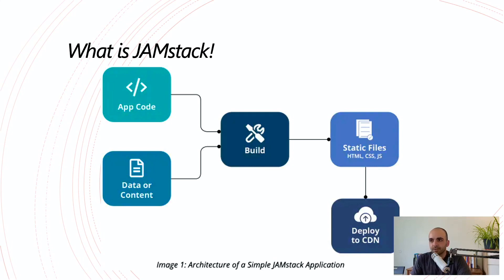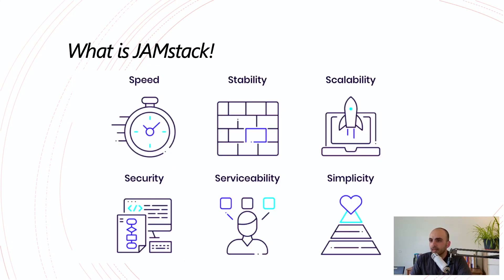To summarize JAMstack: you have some app code — like Vue.js logic — and some data or content using Markdown files, which is pretty common these days. You use build tools like VuePress if you're using Vue.js, or Jekyll as a static site generator. That produces static files, which you then deploy on the cloud. These days you don't even need to create pipelines — you just point your repository to the CDN provider and they host it for you.